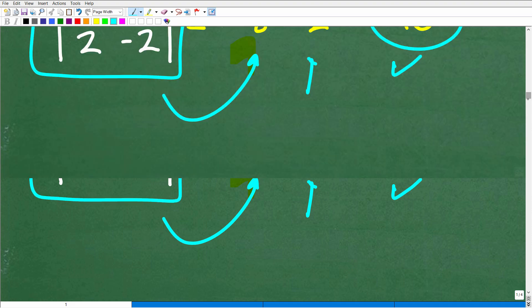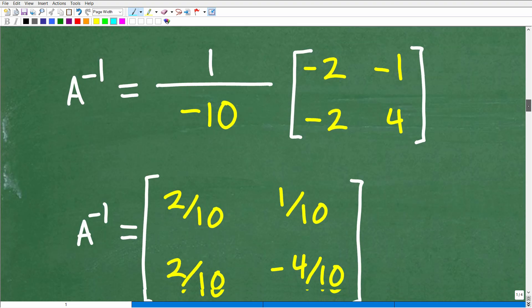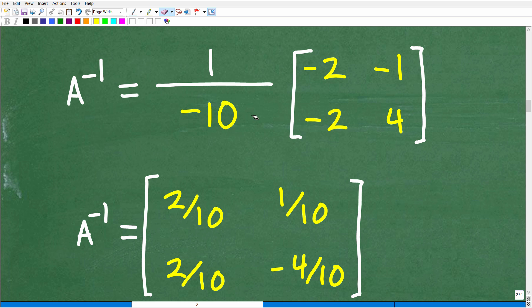Okay, so now we're going to plug that negative 10 in for our result right here because that's what we just found, the determinant. So, we have 1 over negative 10, and now we're going to do what we call scalar multiplication. So, oops, I didn't want to do that.